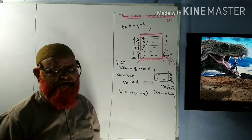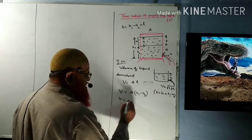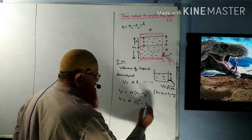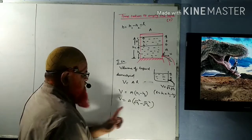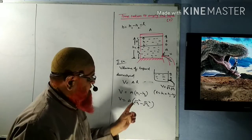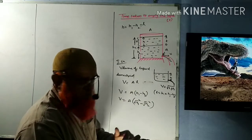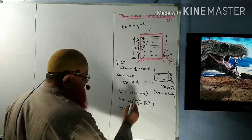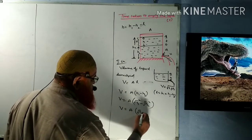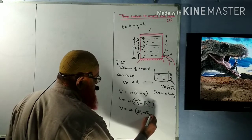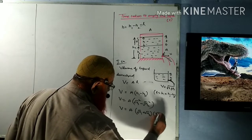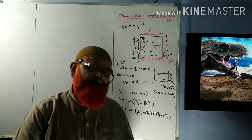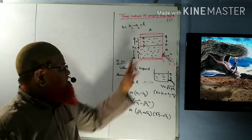We can write H1 minus H2 as (√H1)² minus (√H2)². Using the identity A² minus B² equals (A+B)(A-B), this becomes: V = A × (√H1 + √H2)(√H1 − √H2). This is our equation for the volume of liquid that drains.